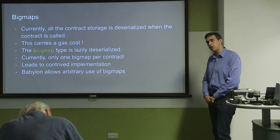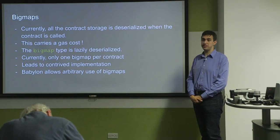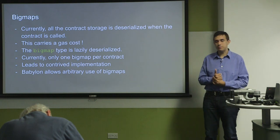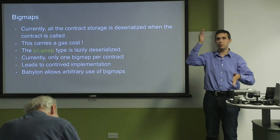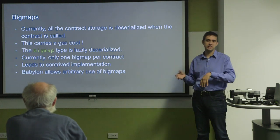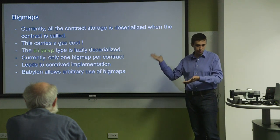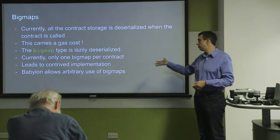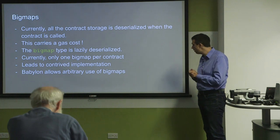Currently you only have one big map per contract, which has led to some contrived implementations — if you need to store two things like a list of customers and a list of providers, you have to use a union type and hash it into one big table, which leads to ugly code. Fortunately, there's a proposal currently submitted to a vote called Babylon, which will let you have as many big maps as you want, making for much cleaner code.